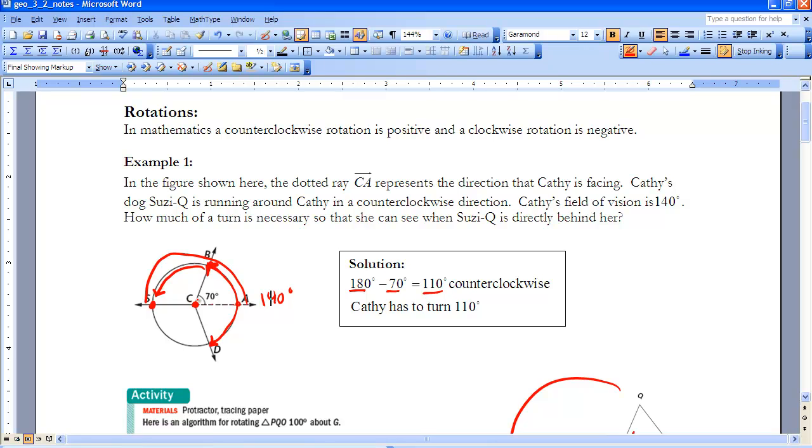So that means Cathy would turn her head, or in a mathematical term, Cathy would rotate her head 110 degrees in order to see her dog, Susie Q.